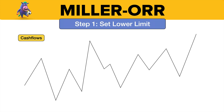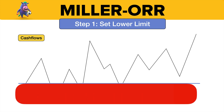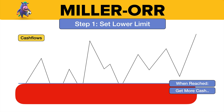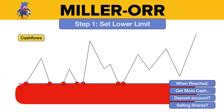First of all, it says we're going to set a lower limit. We always want this amount in our bank account, so we can't allow the cash to go below that cash level. That's the lower limit. And when we reach it, we need more cash — we need to get more cash by either getting money from the deposit account or from selling shares, something like that.